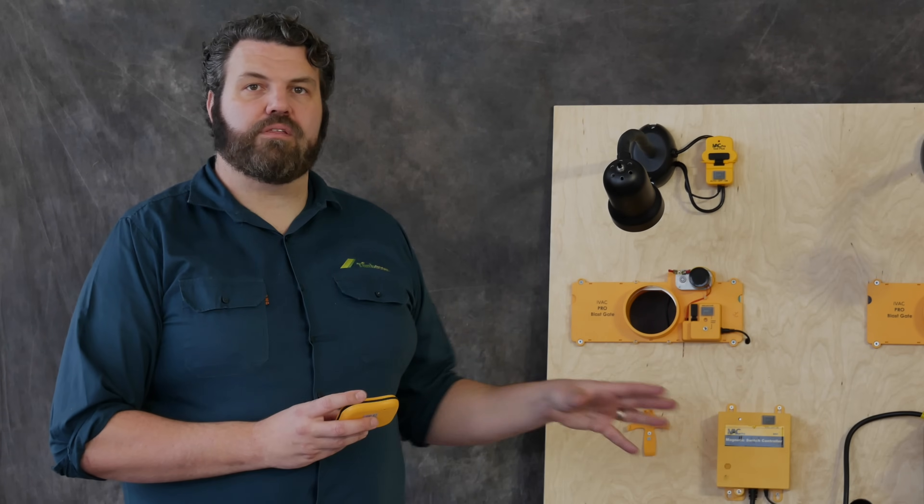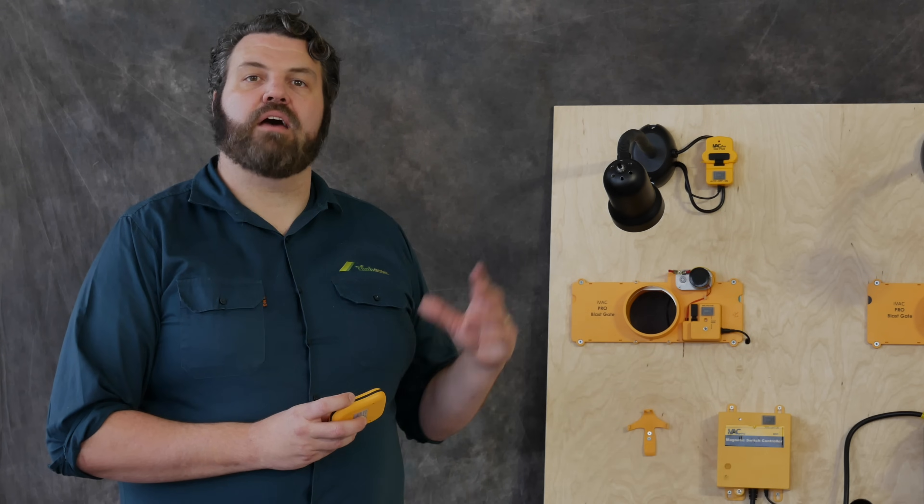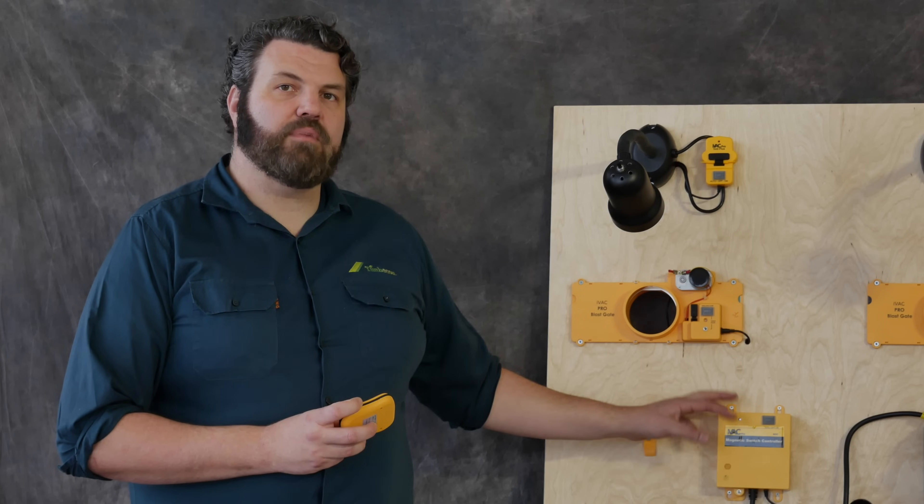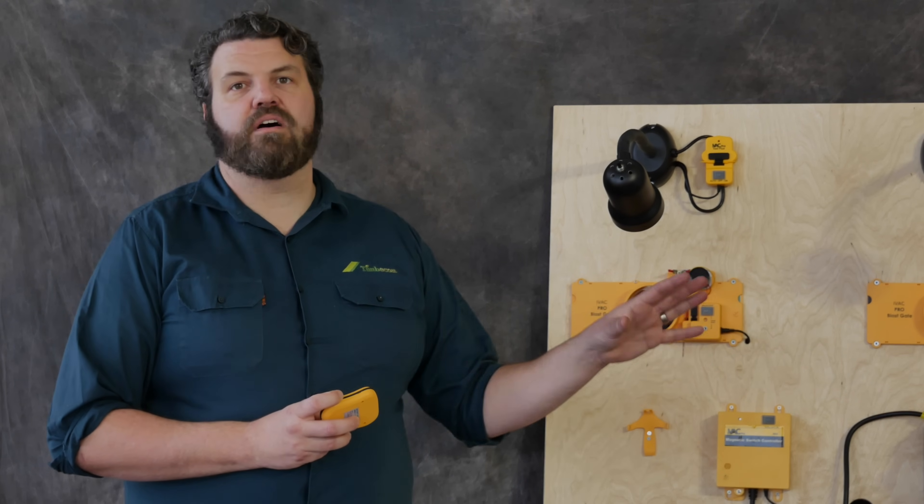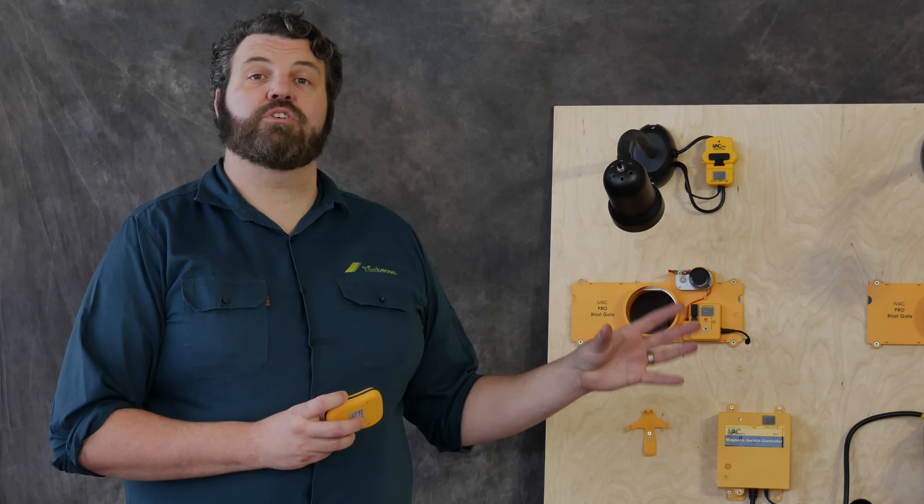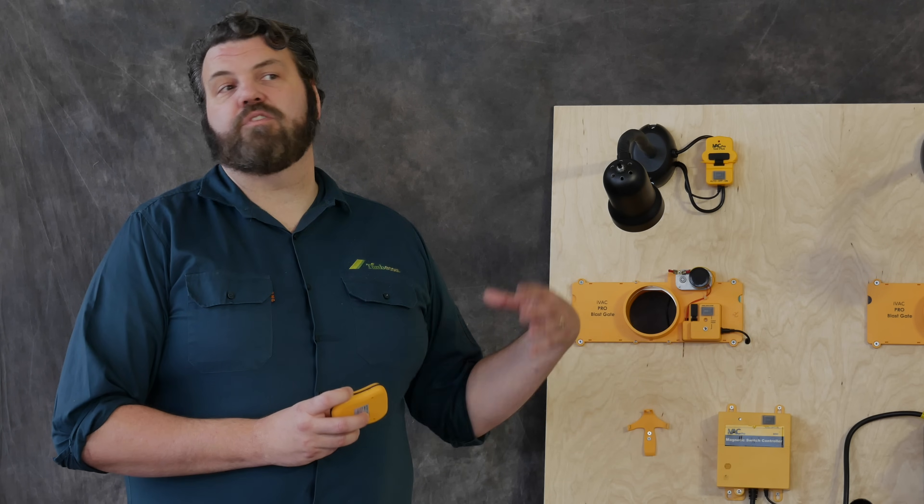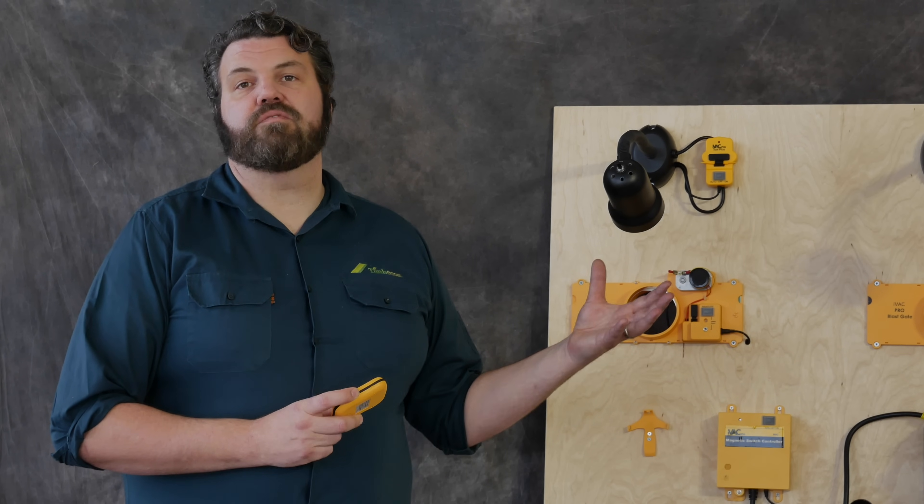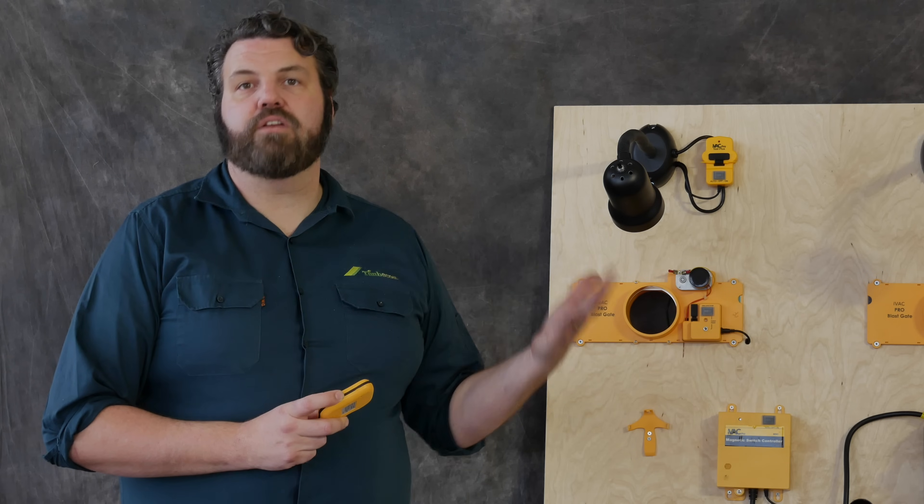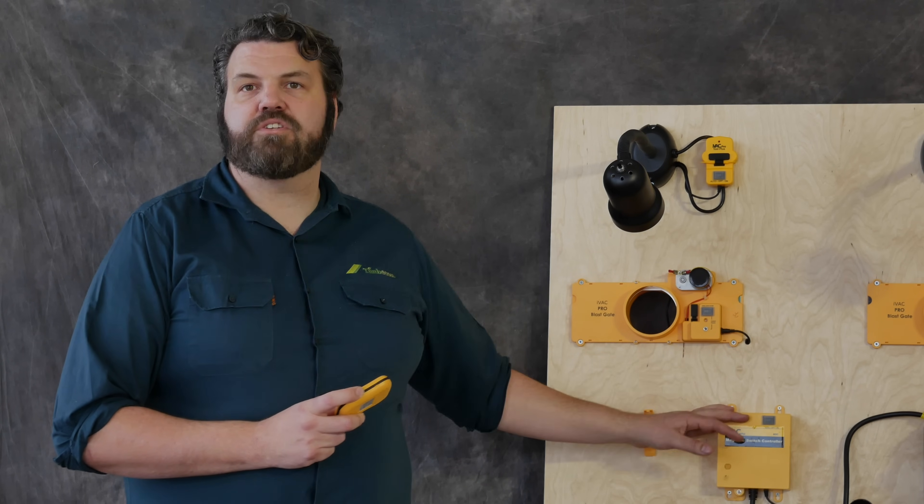One of the issues you have with industrial dust extractors is you can't turn them on and off all the time. IVAC have already thought about this. You can set the MSC to have a minimum runtime for your dust extractor so it doesn't damage the motor. So if you, for instance, are doing a series of test cuts where you're going to be turning the machine on and off, what you can do is you can set a minimum runtime of, say, five minutes.